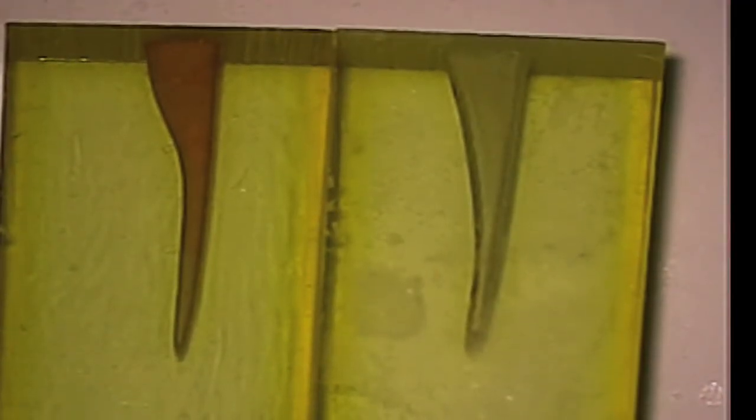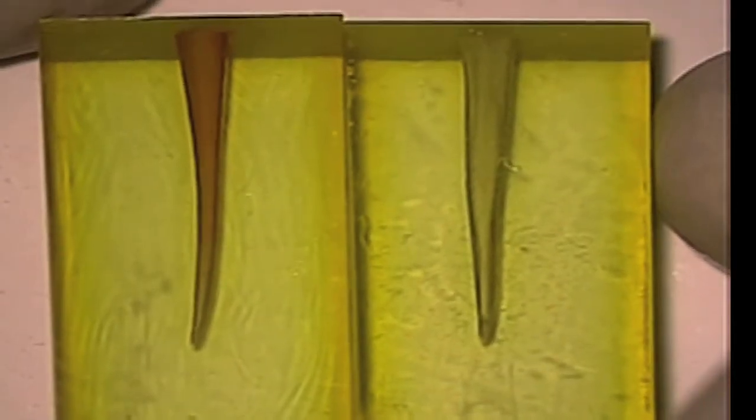You can see the three-dimensional cleansing action as we rotate the before and after blocks 90 degrees. At no point do you see any of the dye remaining.